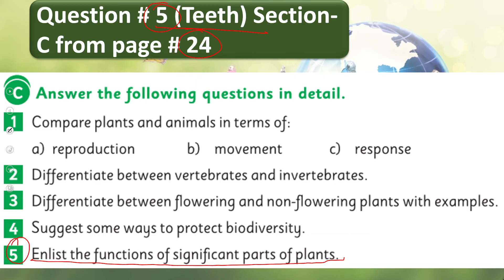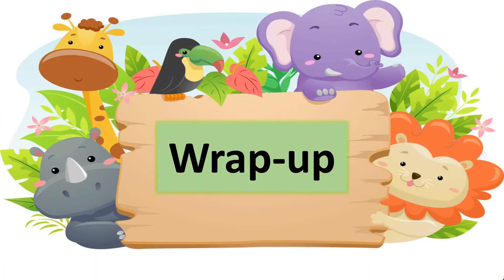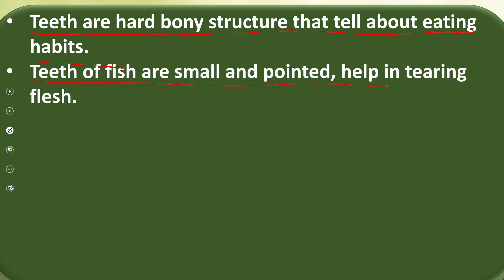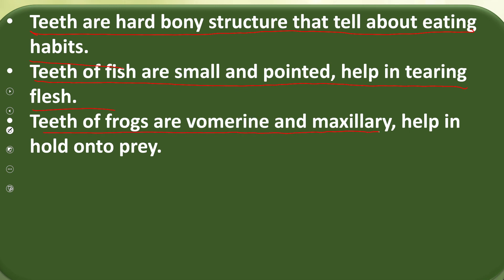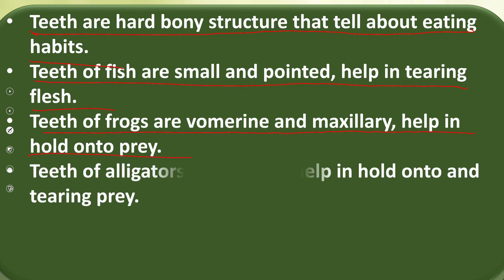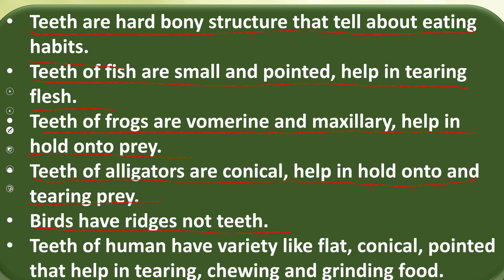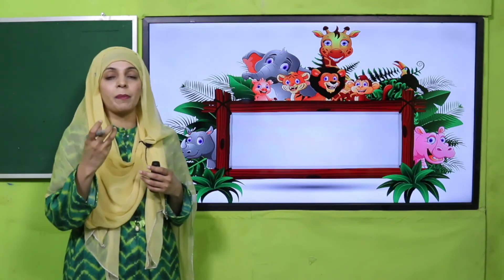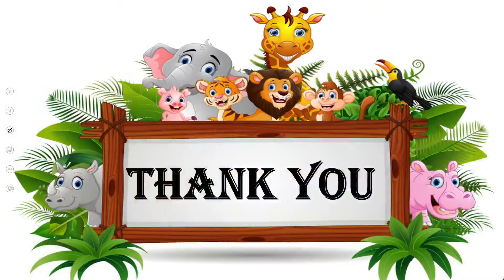Now is the time for wrap-up. Today we have learned that teeth are hard bony structures that tell about the eating habits of animals. Teeth of fish are small and pointed — help in tearing flesh. Teeth of frogs are vomerine and maxillary — help in holding onto the prey. Teeth of alligators are conical — help in holding and tearing the prey. Birds have ridges and do not have teeth. Human teeth have variety — flat, conical, and pointed — which help in tearing, chewing, and grinding the food. Keep everybody around you safe, have a good day, thank you so much, and Allah Hafiz.